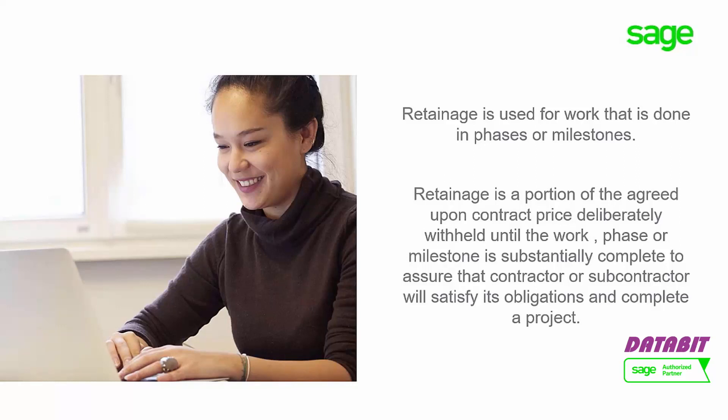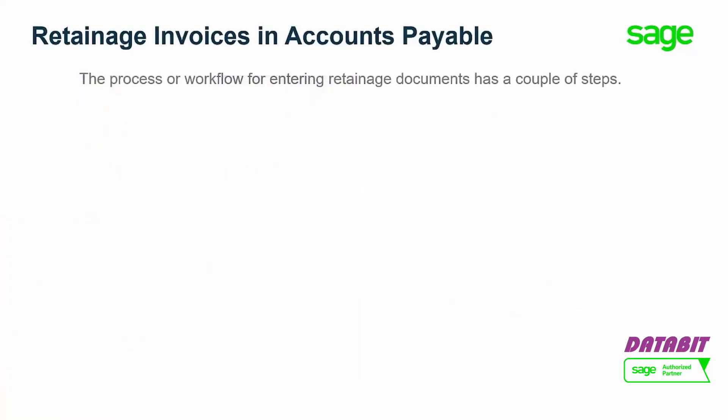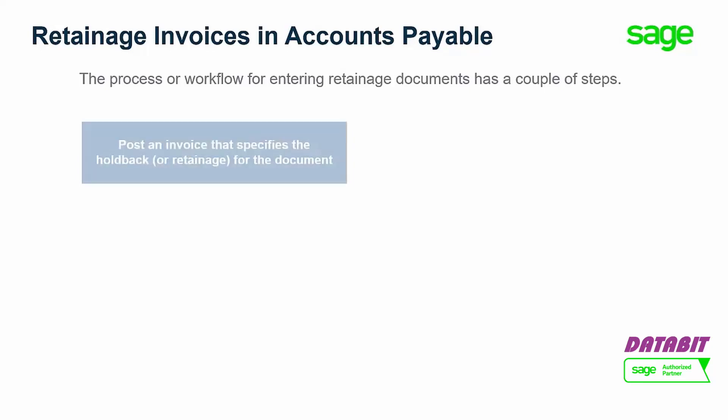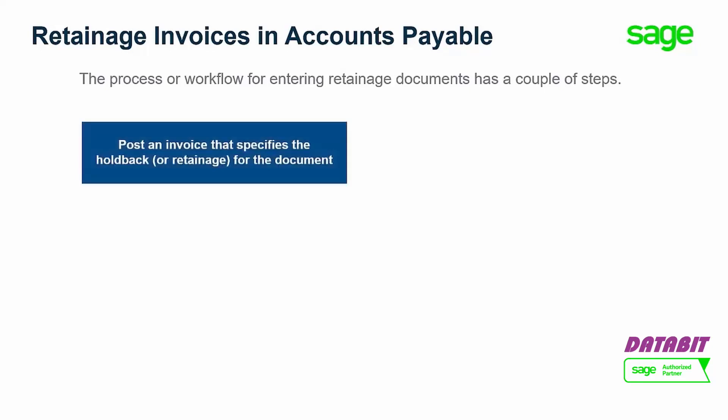The process or workflow for entering retainage documents has a couple of steps. First, we post an invoice or debit note or credit note that specifies the holdback or retainage for the document. When this transaction is posted, the inventory or expense account is debited while the retainage control and the payable control accounts are credited.